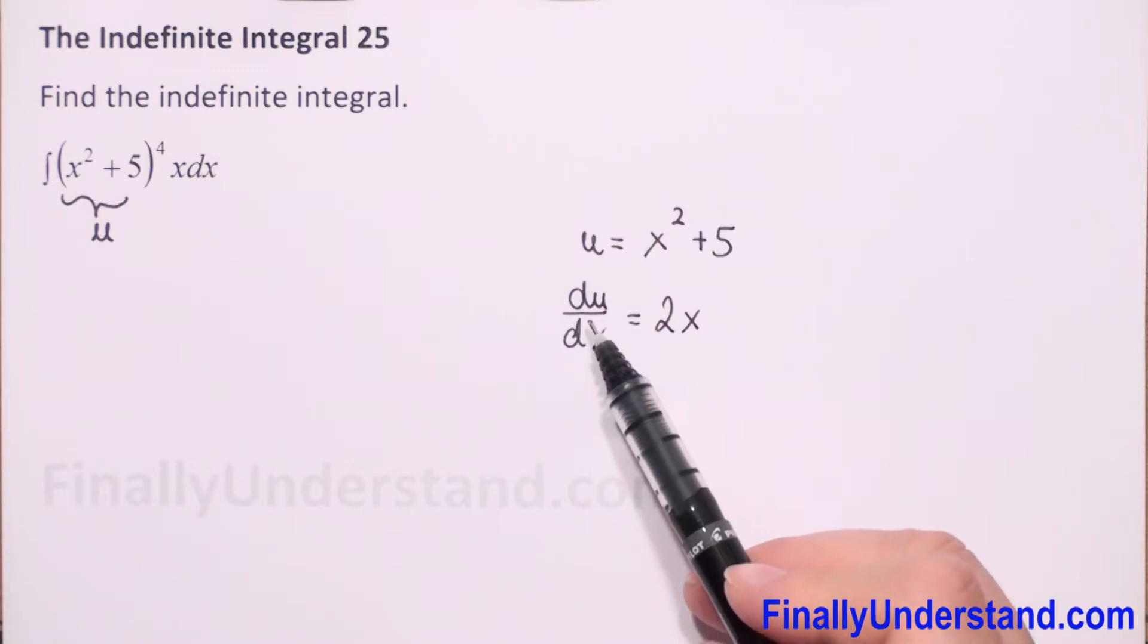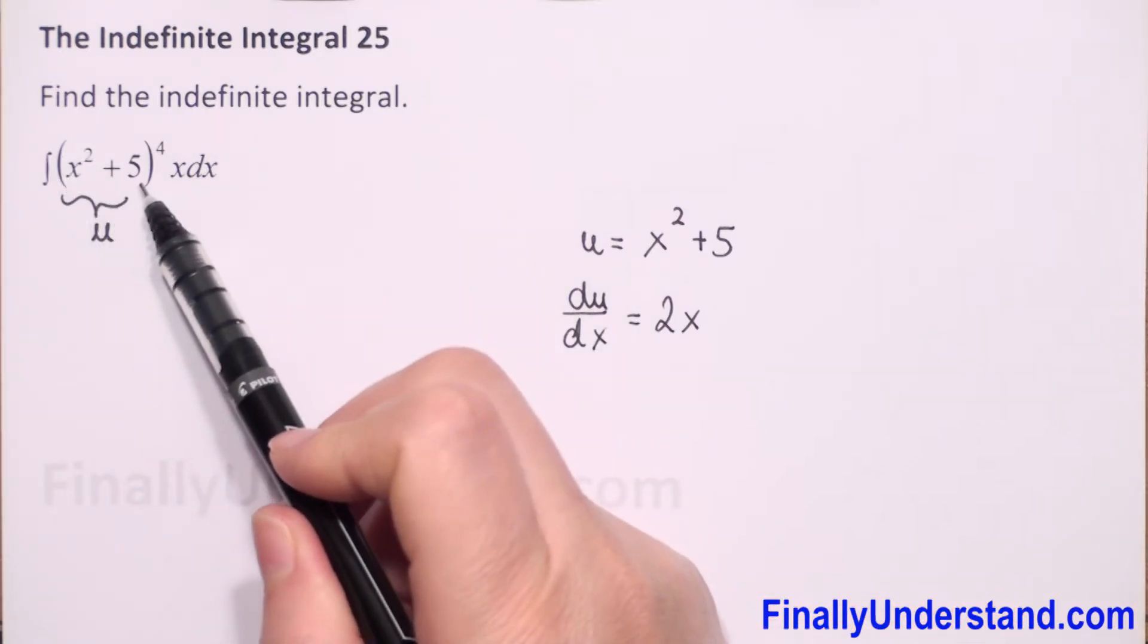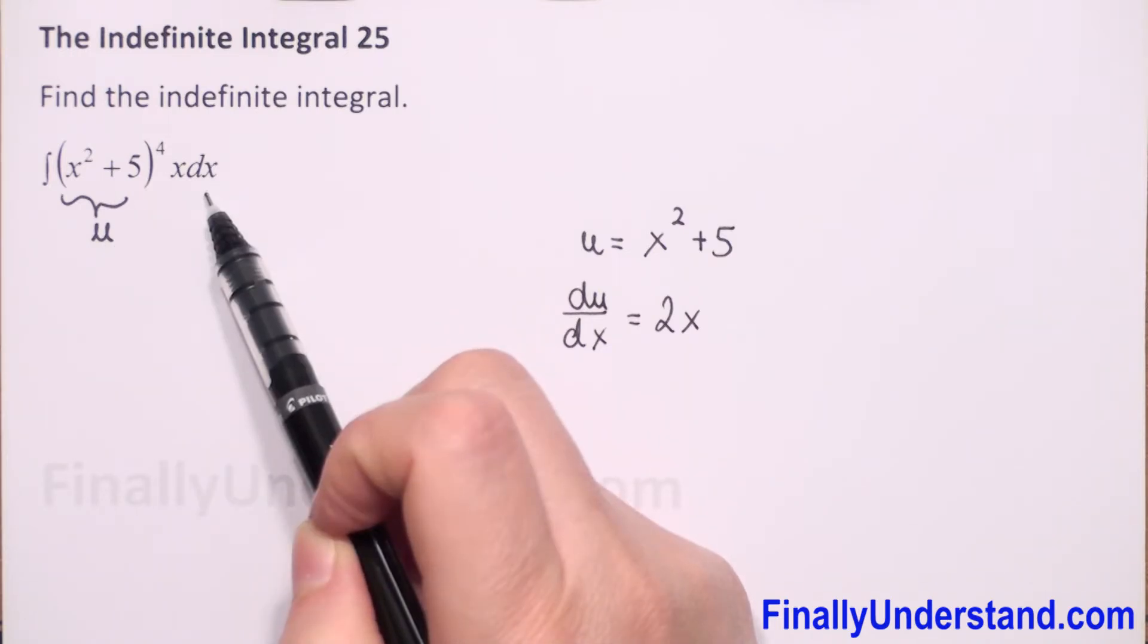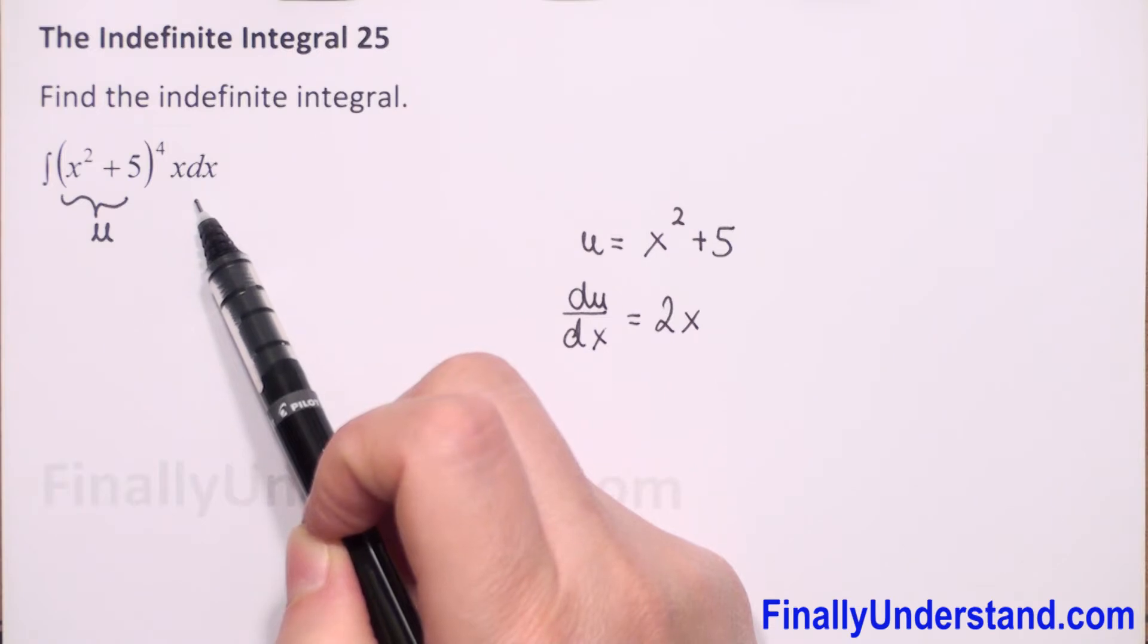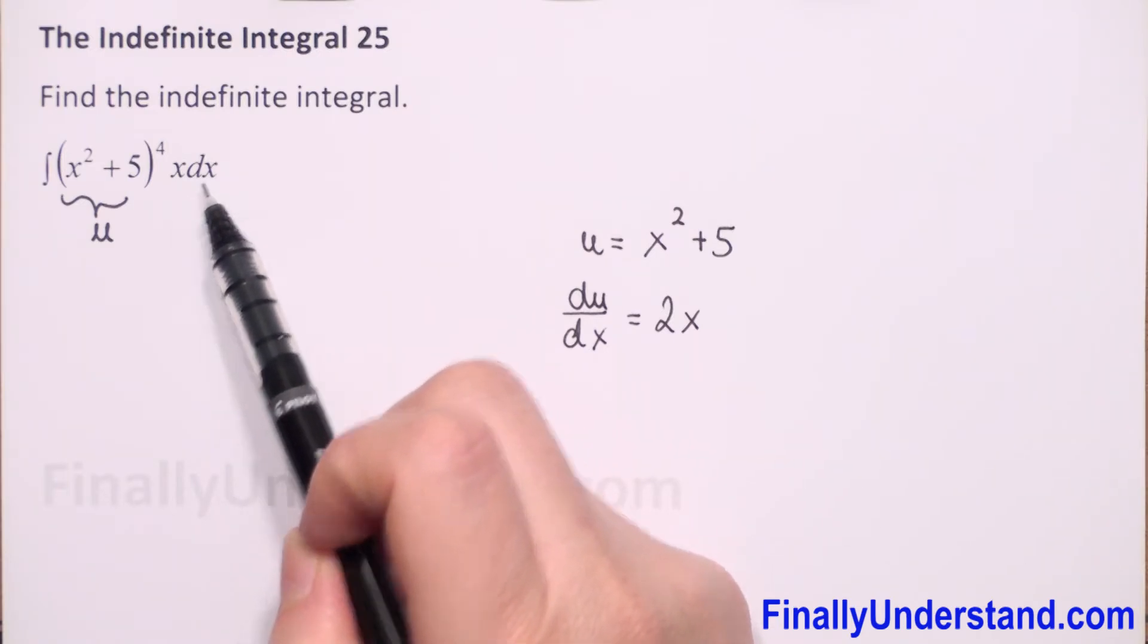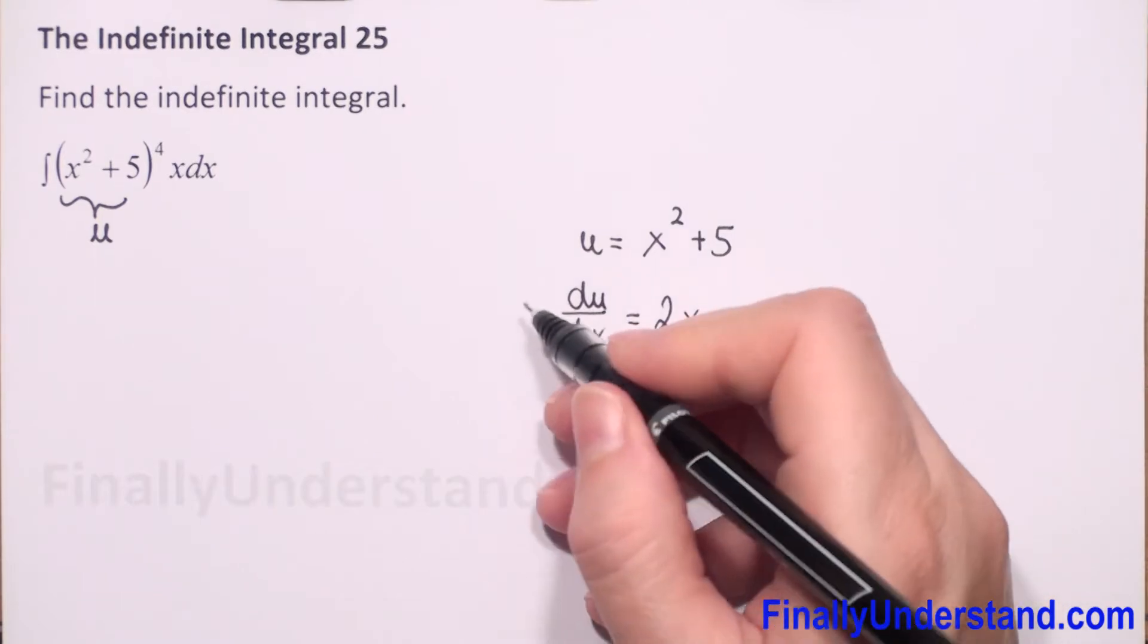Now we have to find from this equation du, because we substitute our parentheses by u. We cannot mix up x and u in one expression, so we need to substitute x dx. We have du over dx, so first I will multiply both sides by dx.